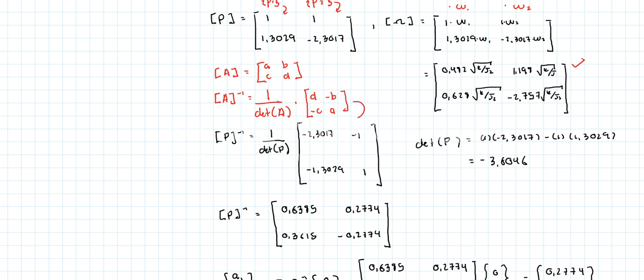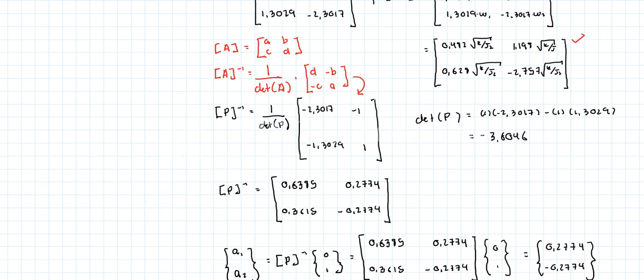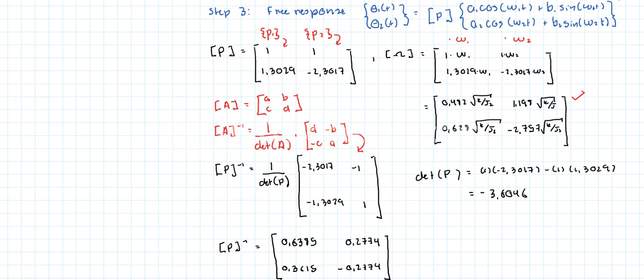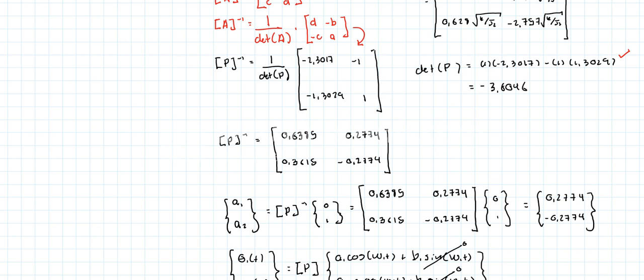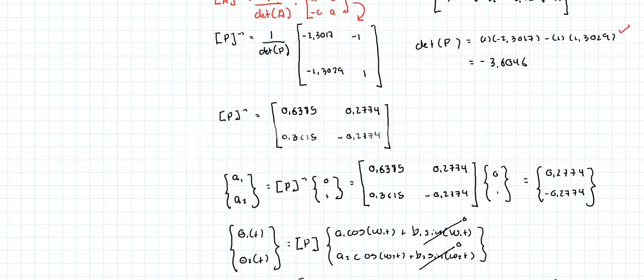And that's what you have here. The determinant, you find it simply by multiplying this by this, which is what you have over here. Okay. And you find minus 3.6046. Therefore, if you run the numbers, you're going to find that the inverse of the P matrix is this guy over here.